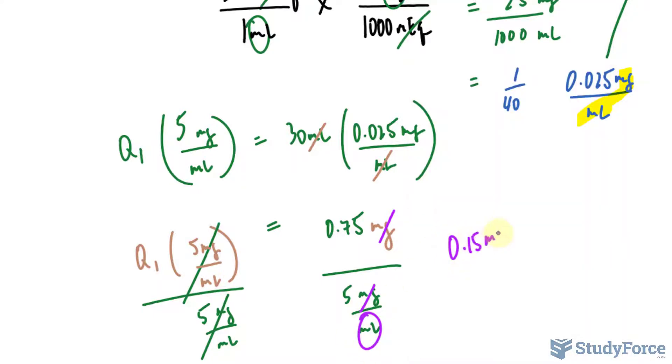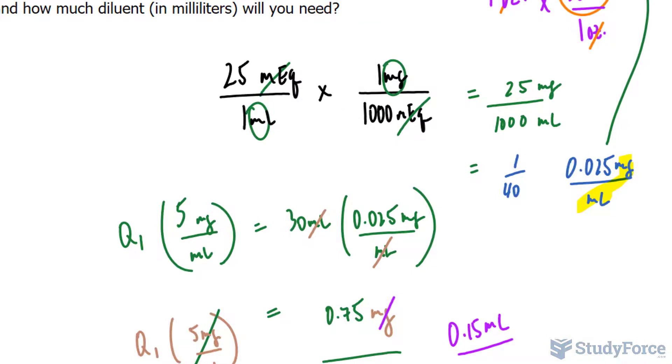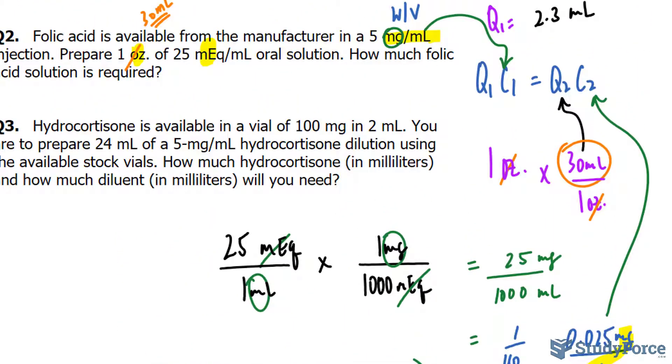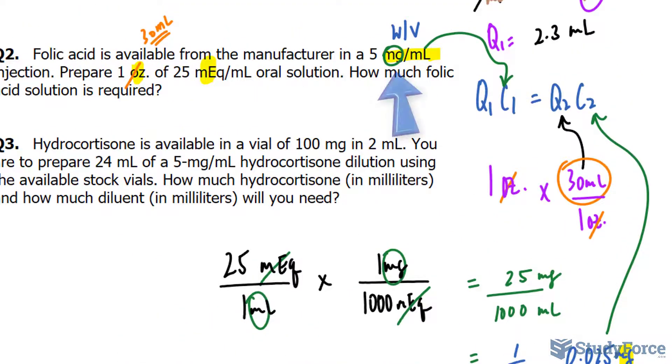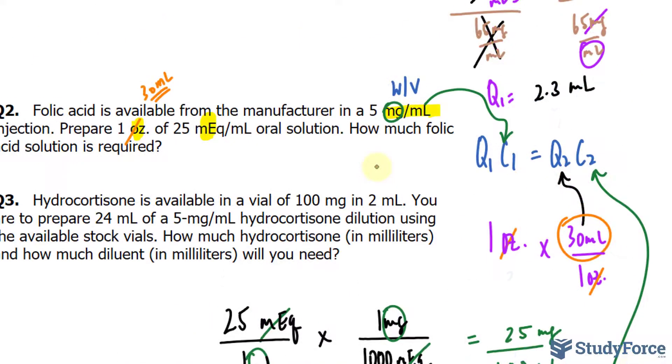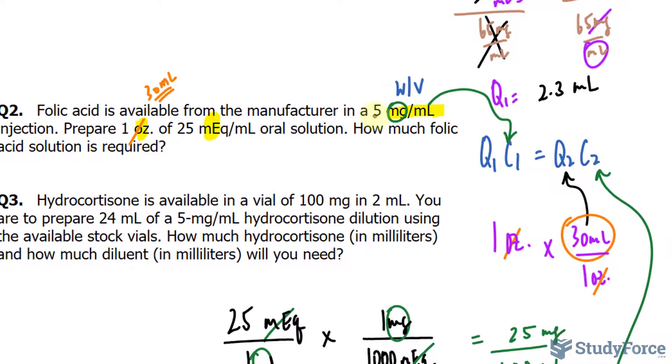0.15 milliliters of the stock folic acid is required to make a solution that's 1 ounce with a concentration of 25 milliequivalents per milliliter. This value right here is Q1. And just as before, you can easily find the amount of active ingredient of the stock solution by taking this volume and multiplying it to its concentration, and you would find out the weight of the active ingredient.